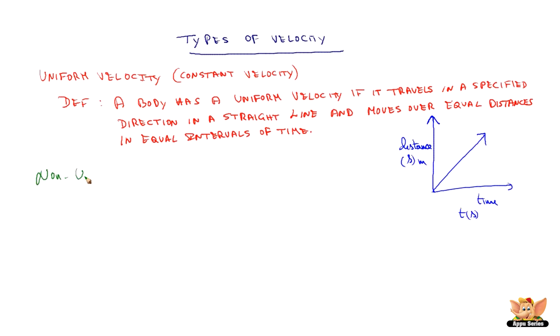Let us see what is non-uniform velocity. Velocity of a body can be changed in two ways. One, by changing the speed of the body, we mean by changing the magnitude of the velocity. Or by changing the direction and keeping the speed constant.